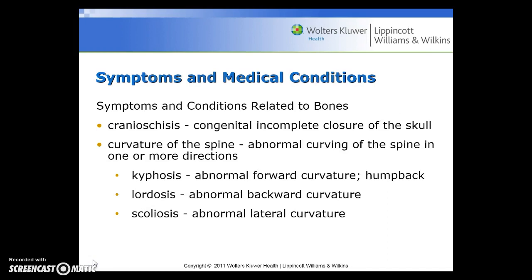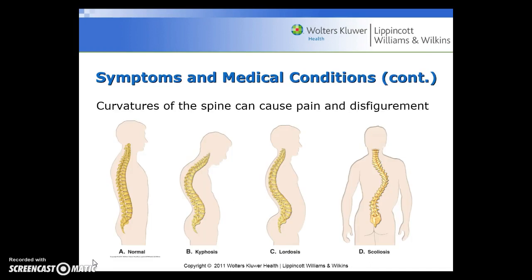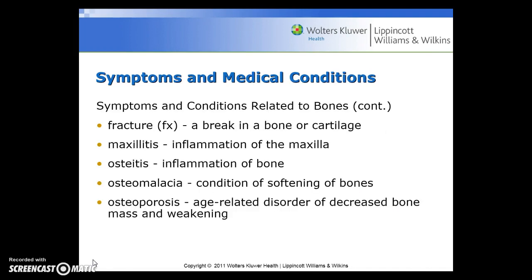Symptoms and conditions related to the bones: cranioskisis is a congenital incomplete closure of the skull. Curvature of the spine or abnormal curving of the spine in one or more directions can be kyphosis, which is the abnormal forward curvature or humpback; lordosis is the abnormal backward curvature; or scoliosis, which is an abnormal lateral curvature of the spine. These can cause pain and disfigurement. A fracture is a break in a bone or cartilage. Maxillitis is an inflammation of the maxilla. Osteitis is an inflammation of the bone. Osteomalacia is a condition of softening of bones. And osteoporosis is the age-related disorder of decreased bone mass.